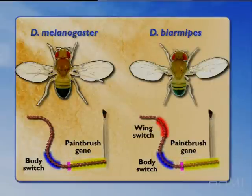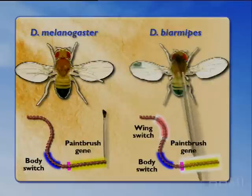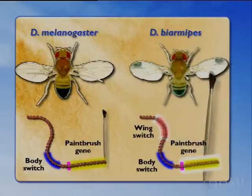But in the spotted fruit fly, there's an additional switch — a switch that draws a spot in the wing — such that the paintbrush gene is also used, in addition to its other jobs, in drawing a spot on the wing of these fruit flies. The same principle applies to butterflies.